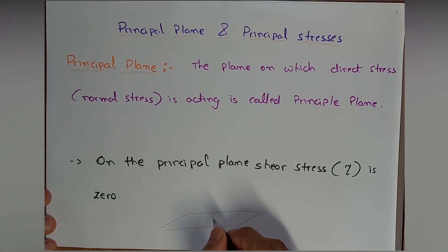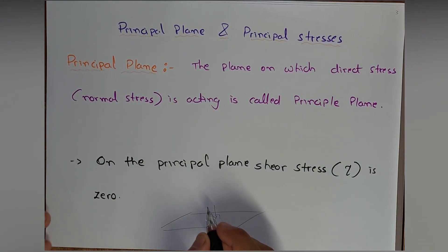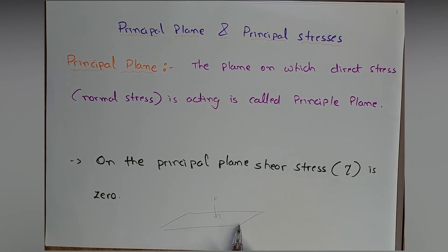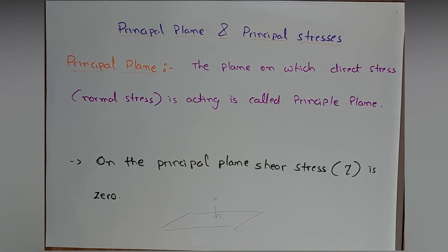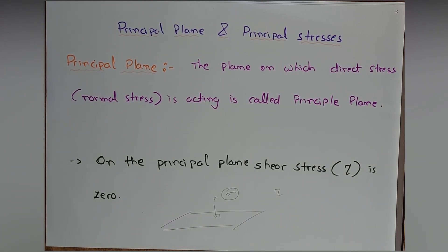Considering any two-dimensional plane, if any force is acting at 90 degrees, a direct or normal stress is induced, since force upon area is the formula of stress. So this plane acted upon by a 90-degree force, causing direct or normal stress, is known as the principal plane. On the principal plane, shear stress tau is zero — meaning only normal stress sigma acts on the plane, and no shear stress acts on it.